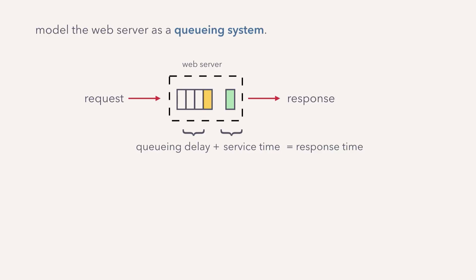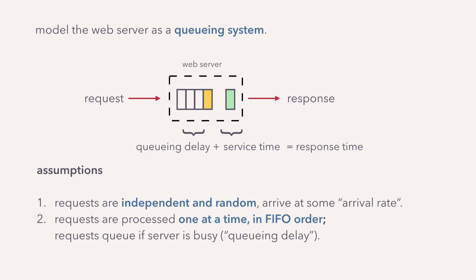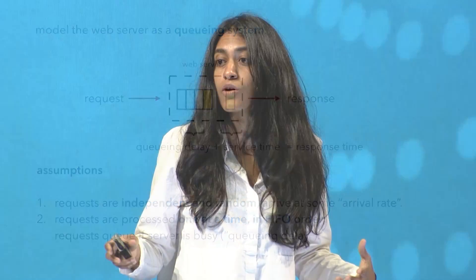First, the assumptions we have about the system. We're going to assume that requests are independent and random — not correlated with each other or with responses. Second, requests are processed in first-in-first-out order and one at a time, like a single-core, single-threaded server. Third, the service time — the time it takes to process a request — is constant, meaning requests are really the same size. We're also assuming there is no downstream saturation, so the network and the database won't bottleneck.